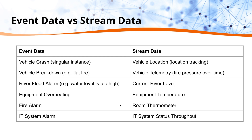Compare this to stream data. With stream data, you may have a sensor located in the river that gives real-time information on flow, the depth of the river, and similar metrics. These sensors are sending data back continuously into the infrastructure for processing. You can see very different volumes of data — event data is very infrequent and low volume, while stream data is continuous.